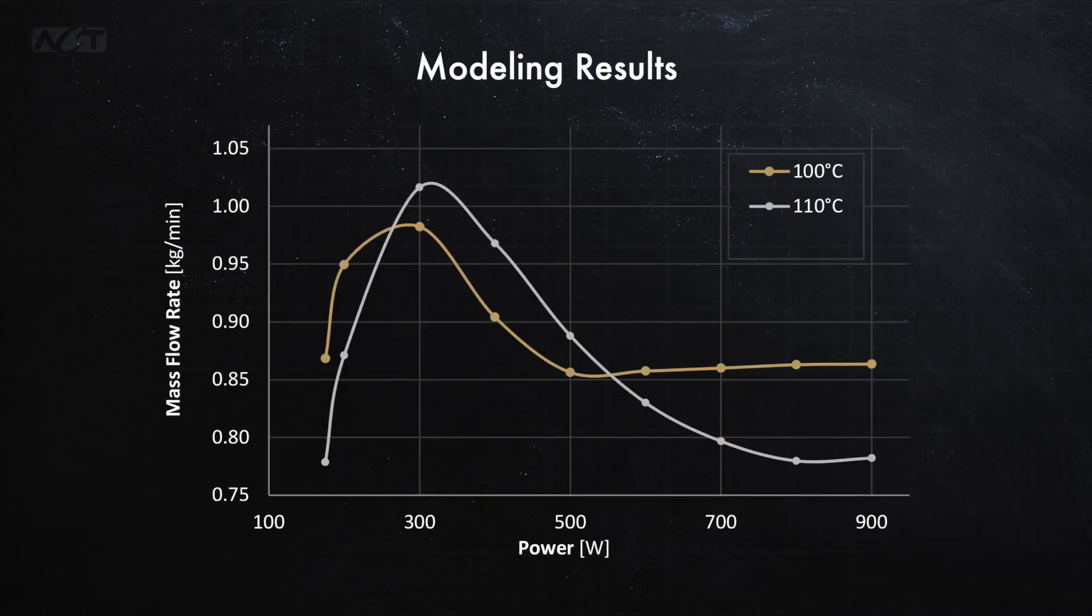Here we see the modeled mass flow rate plotted against power at the three temperatures. Looking at the curve for 100°C, we see that the flow rate rises at power is less than about 300 watts before falling to a nearly steady value above 500 watts. The curves for 110 and 120 are similar, but the maximum flow rate peak shifts to the right as temperature is increased.